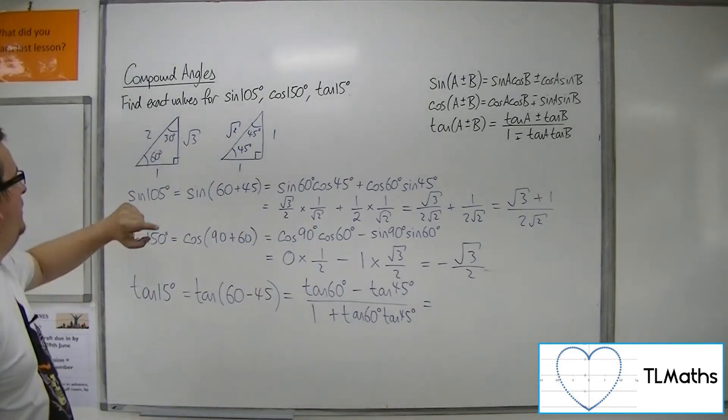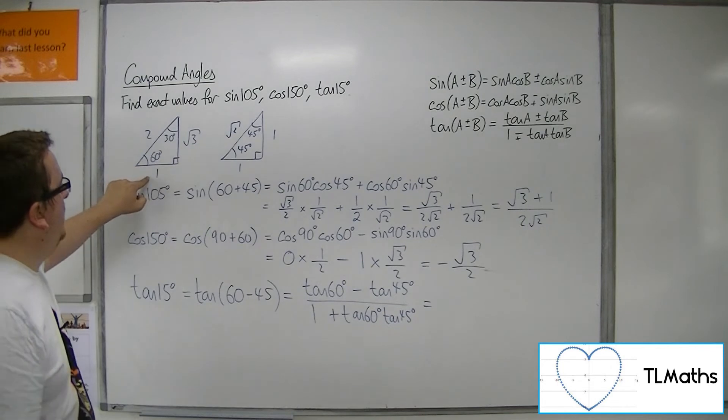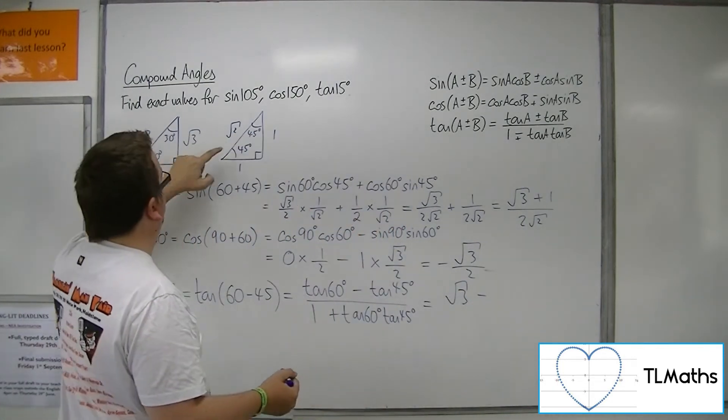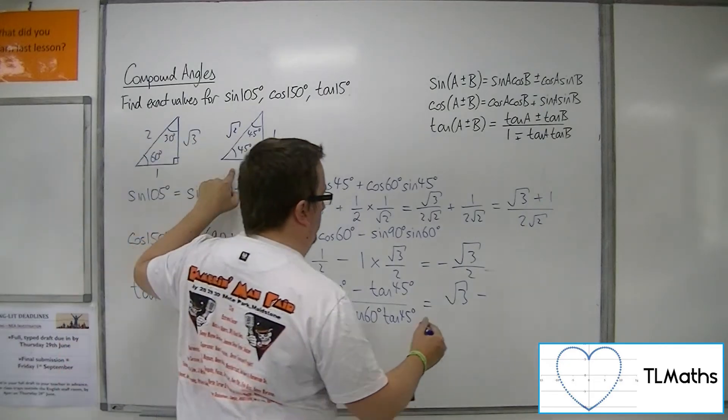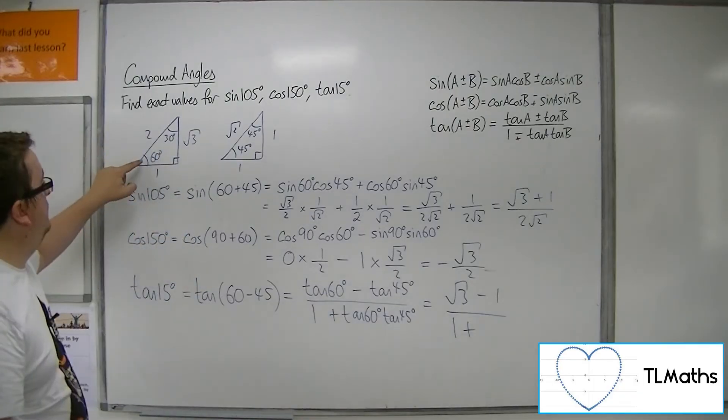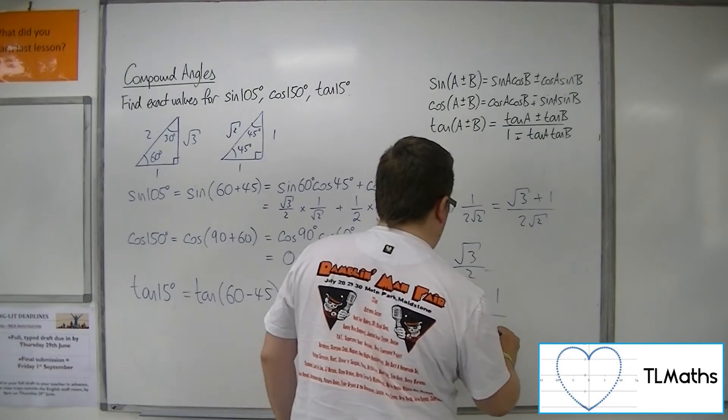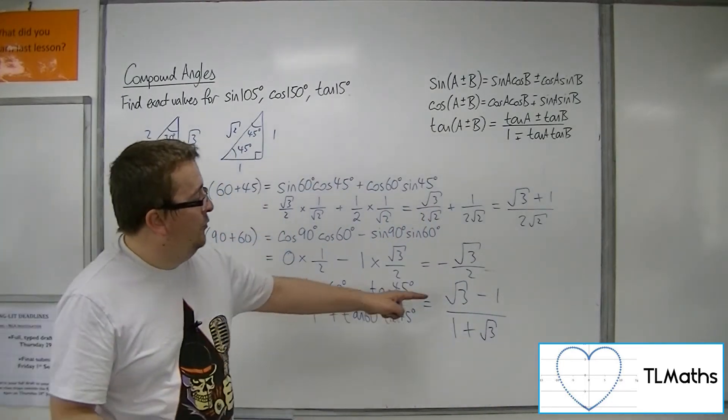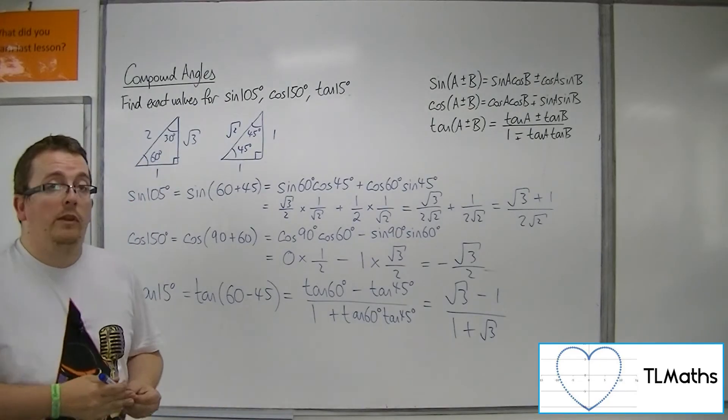Tan of 60 is opposite over adjacent, so root 3. Tan of 45, opposite over adjacent, so 1. Tan of 45 was just 1. So it's root 3 minus 1 over 1 plus root 3.